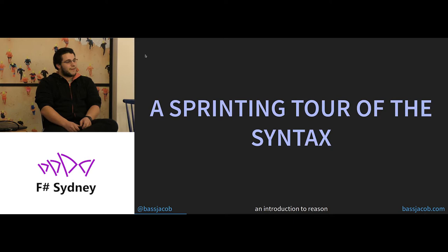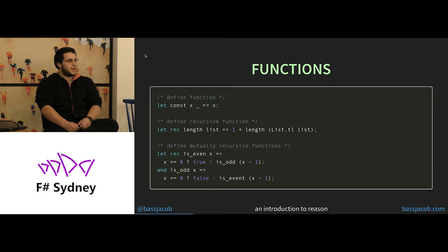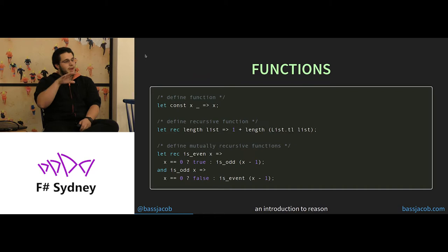We're going to sprint through the syntax because the underlying language features are very similar to F-sharp's. Starting with functions: the first function defines one where it takes two variables and returns the first, ignoring the second. You can define functions using the let keyword — exactly the same as F-sharp. You can name them, define their arguments, ignore the types and let the compiler figure them out. You can define recursive functions, again the same as F-sharp, even with the same recursive keyword since both have their roots in the ML system. You can also define mutually recursive functions.